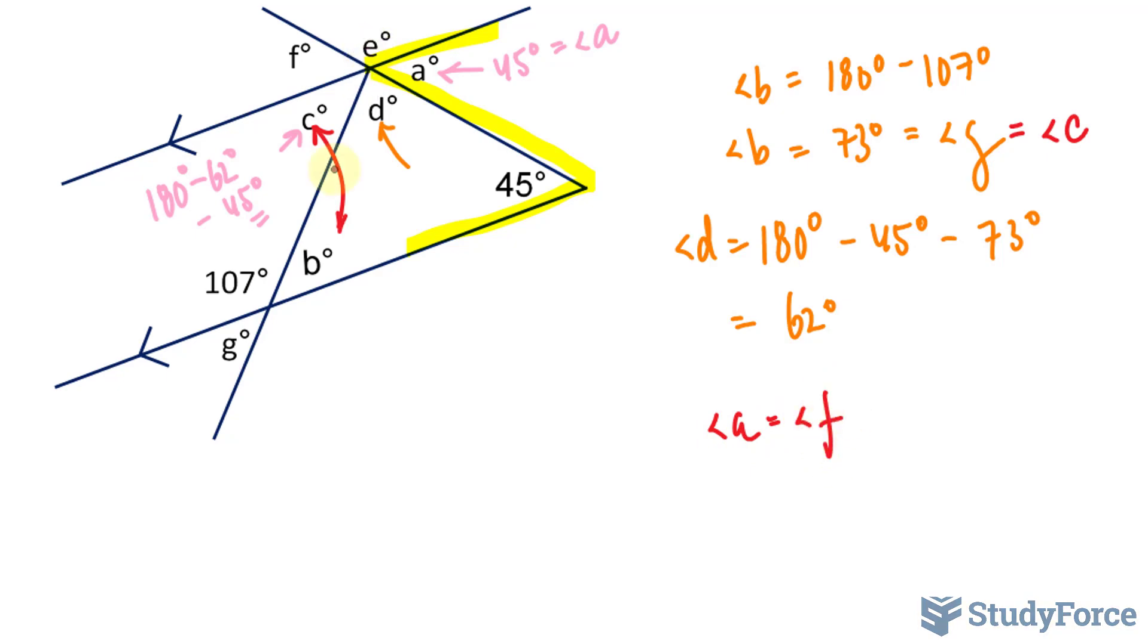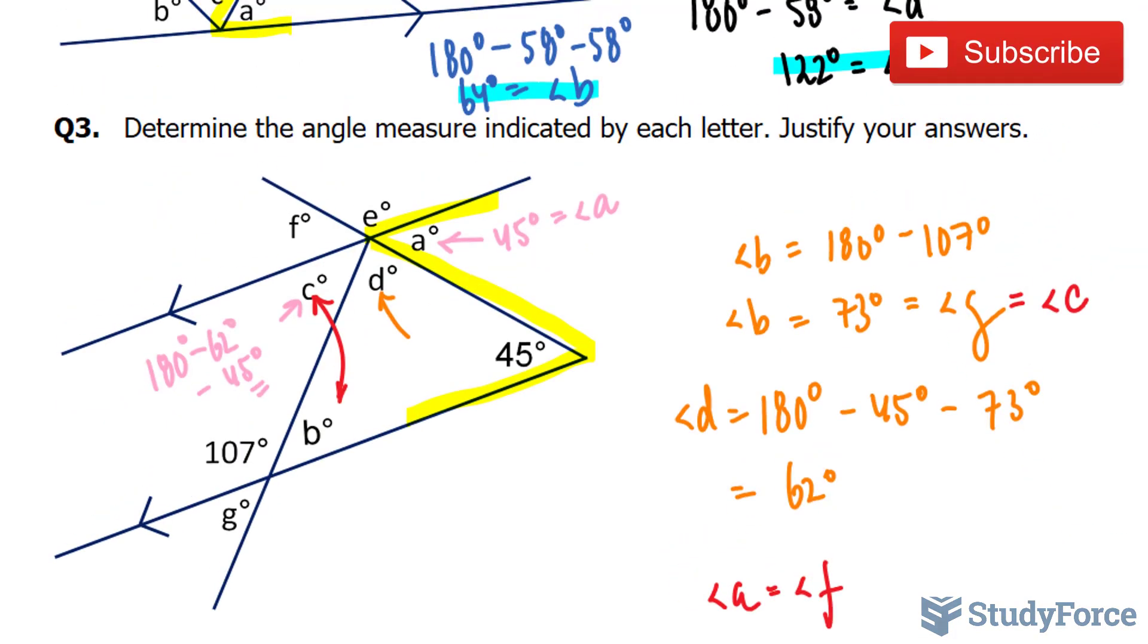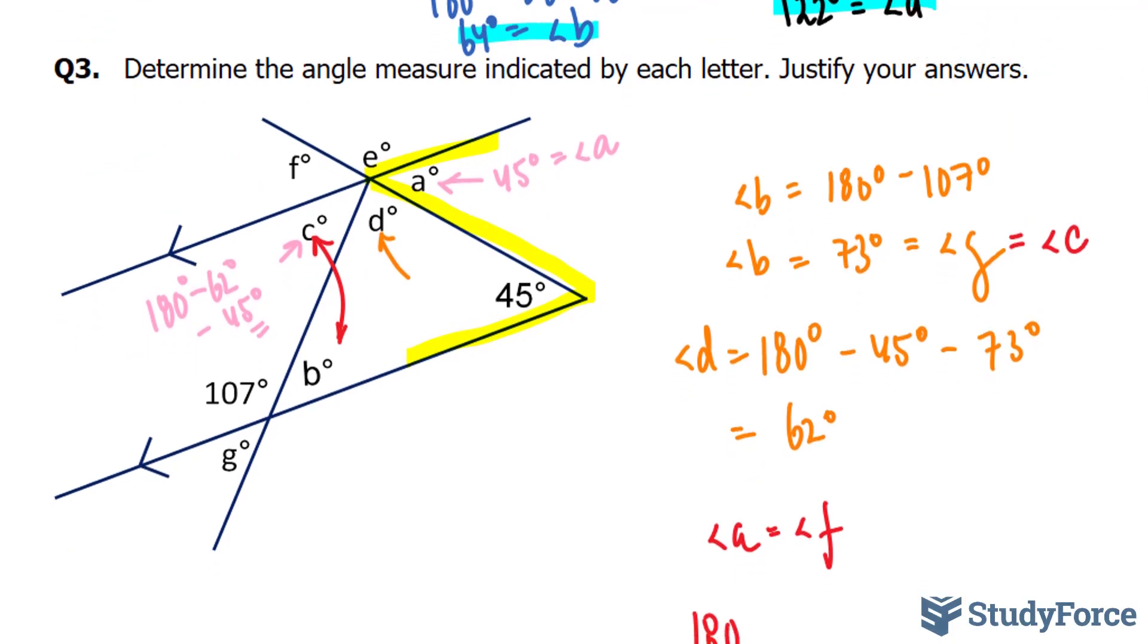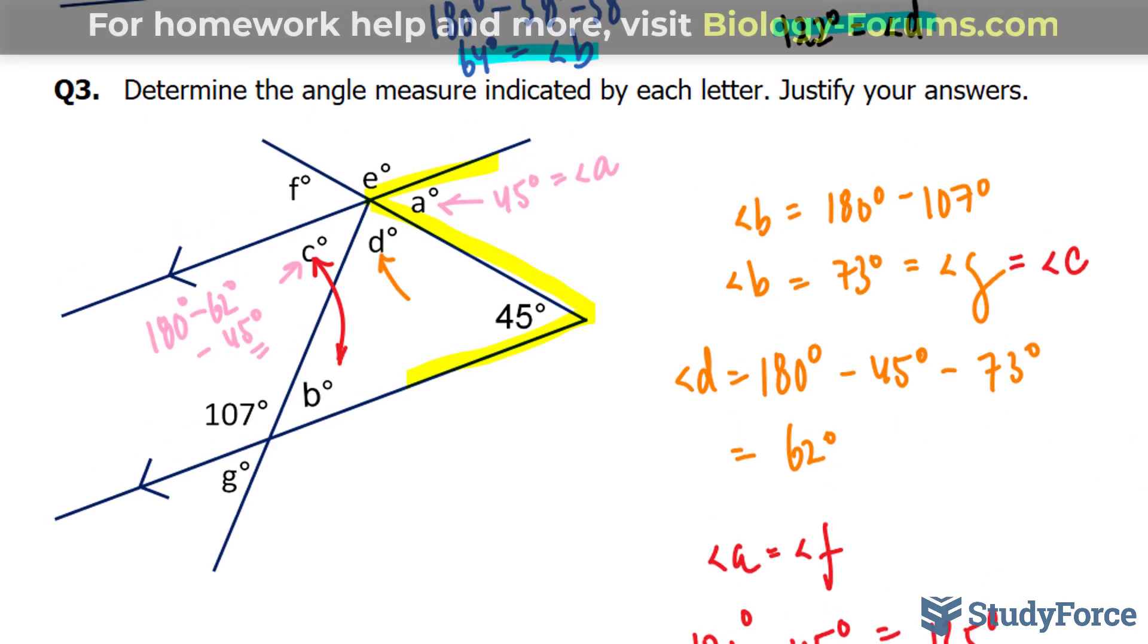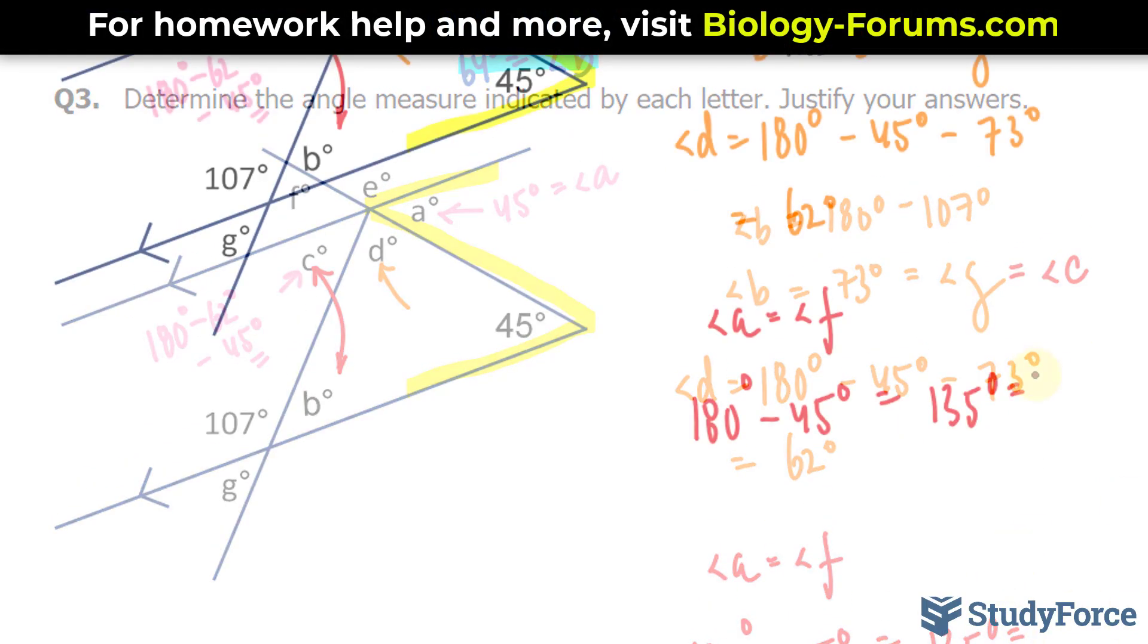And to find out E, all I have to do is subtract 180 from angle F, which is the same as angle A. And that happened to be 45. And you should end up with 135 degrees is angle E.